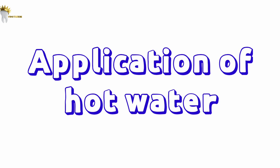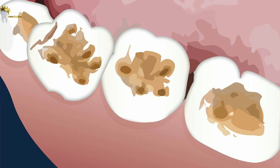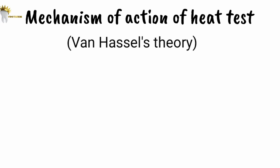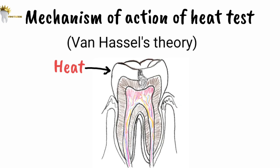Application of hot water is another type of heat test. After isolation of the tooth using a rubber dam, hot water is delivered with a syringe and the patient's reaction is noted. The hot water stays within the rubber dam, so the response is limited to the tooth being tested.